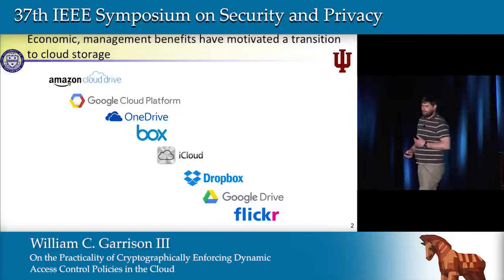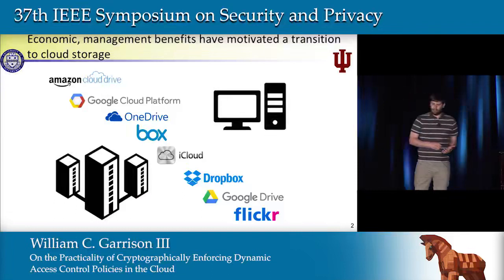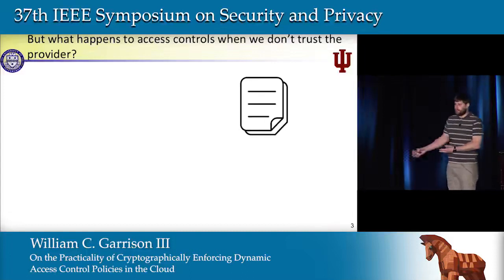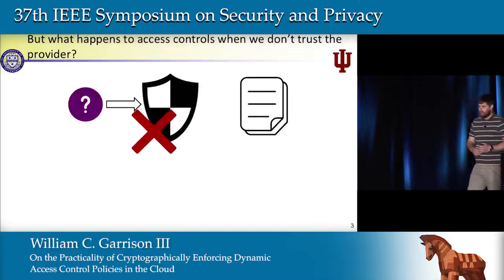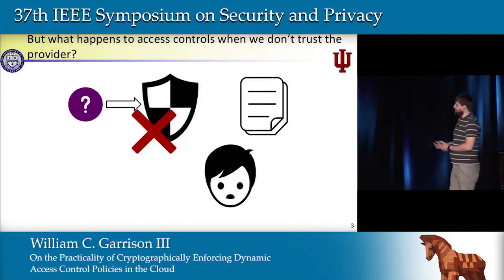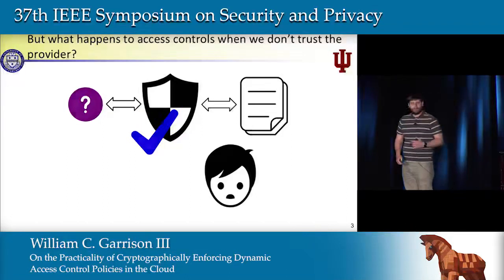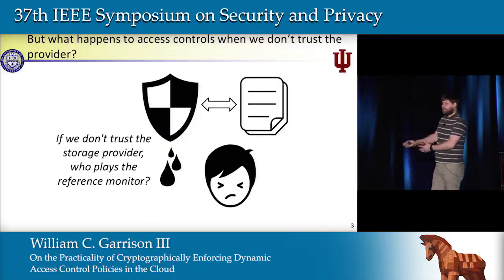There's a wide array of offerings from many companies targeting both the enterprise — things like Amazon Cloud Drive — to the very consumer level, things like Flickr. But how does this affect access control? Traditional access controls are enforced by a trusted reference monitor that fields requests and denies those that shouldn't be permitted. In the cloud scenario, I may not trust my service provider to enforce my policy correctly — they may permit unauthorized access, or be hacked and leak files, something that happened to over 100 million people last year. So if we don't trust the storage provider, who plays the role of the reference monitor?